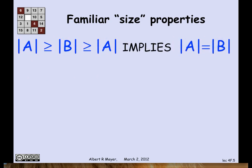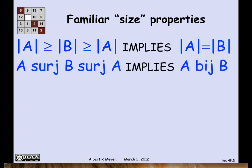An important familiar property is this one. If the size of A is greater or equal to the size of B and the size of B is greater or equal to the size of A, then they're the same size, obviously, for finite sets. Well, what happens when we ask about the surj relation and the bij relation?